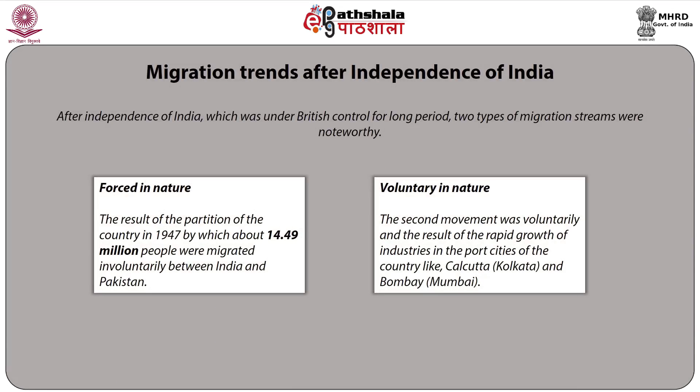Coming to trends and patterns in India, starting with migration trends after independence. After independence, India, which was under British control for a long period, saw two noteworthy types of migration streams. The initial one was mostly forced in nature, the result of the partition of the country in 1947, by which about 14.49 million people migrated involuntarily between India and Pakistan. The second movement was voluntary, resulting from the rapid growth of industries in port cities like Calcutta (now Kolkata) and Bombay (now Mumbai).